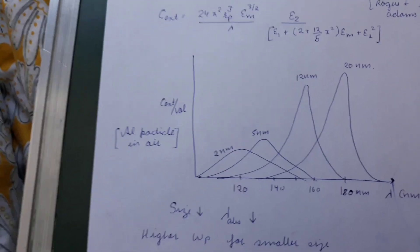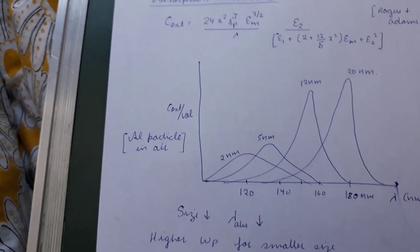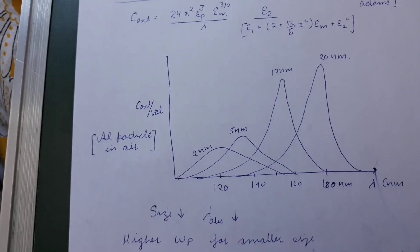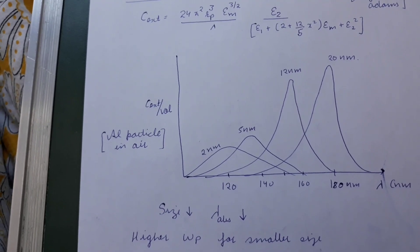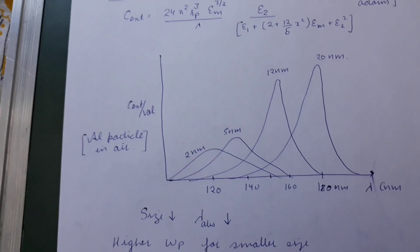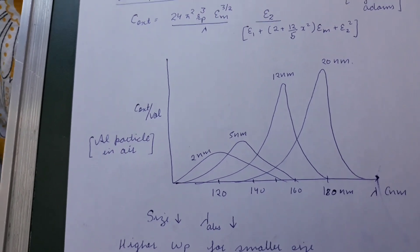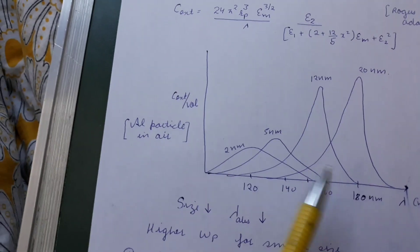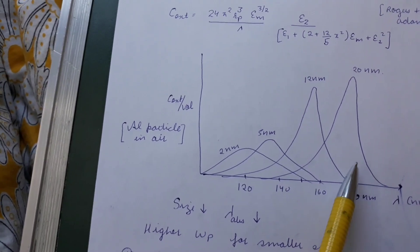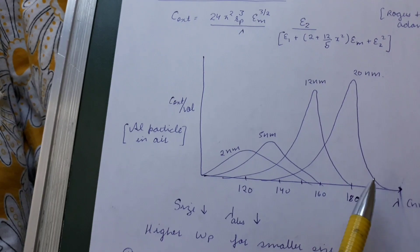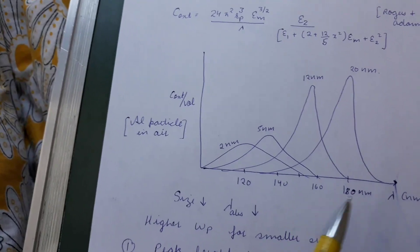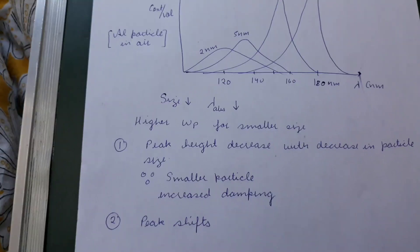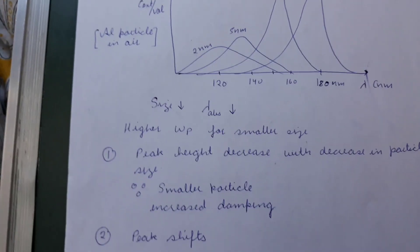This size-dependent absorption also leads to color changes in nanomaterials. For example, bulk gold has a golden color, but gold nanoparticles of 10–20 nm size can show a range of colors — red, blue, or green — depending on their size. This property makes gold nanoparticles useful in many biological applications.